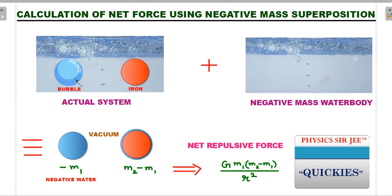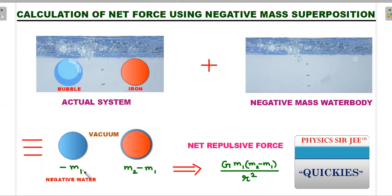When a negative-mass water body is overlaid onto the bubble, it stays as −m1 and cancels the surrounding water. When it overlaps the iron ball, a −m1 mass merges with the iron ball, creating a new body of mass m2 − m1. Everything else becomes vacuum. So effectively, the problem becomes a gravitational interaction between −m1 and (m2 − m1), giving a repulsive force of magnitude G·m1·(m2 − m1)/r². Note: it is not −m1 versus m2, but −m1 versus (m2 − m1).